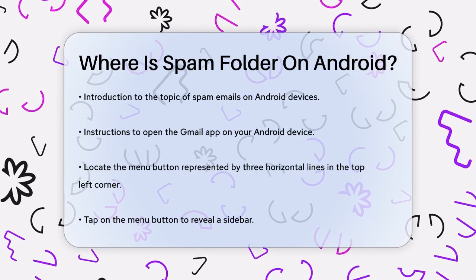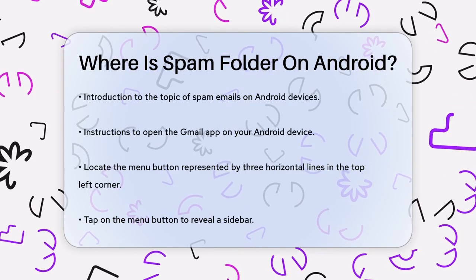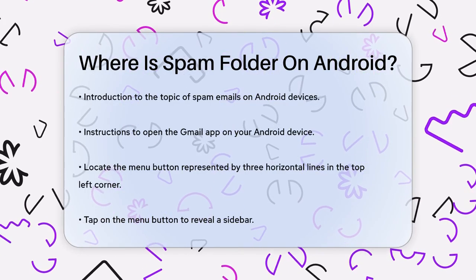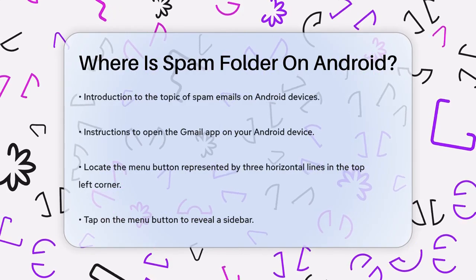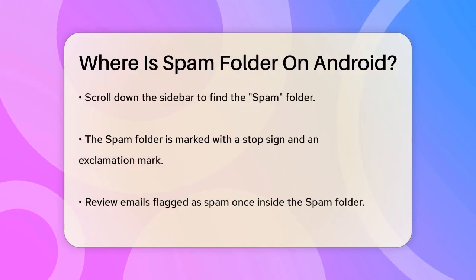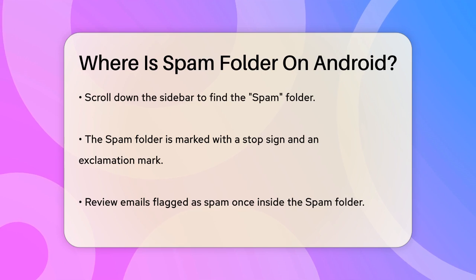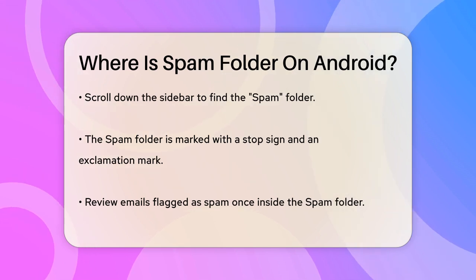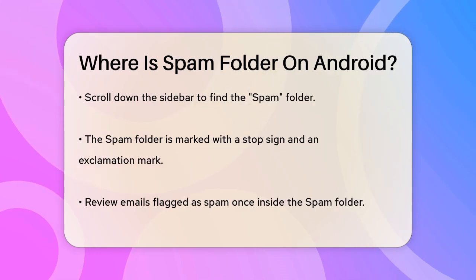Once you're in the app, look for the three horizontal lines at the top left corner of the screen. These lines are like a menu button, so tap on them. When you tap the three lines, a sidebar will appear. Scroll down this sidebar until you see the Spam Folder. It might be a bit down the list, but it's there, marked with a stop sign and an exclamation mark.